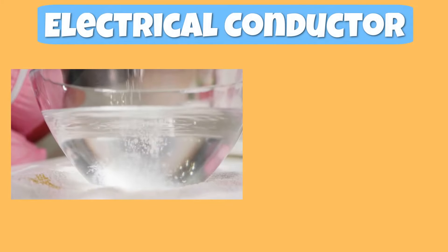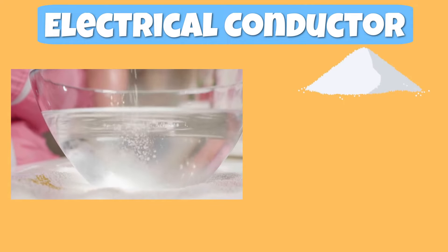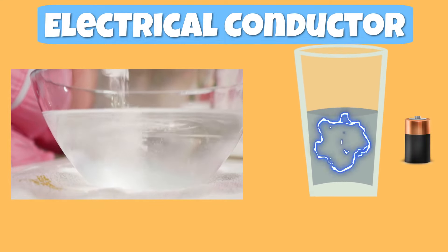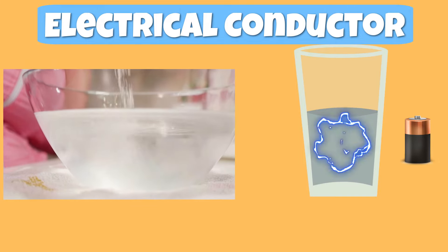An example of an electrical conductor that is not a metal is salt water. Although pure salt and pure water are not good conductors on their own, when they're mixed together into a solution, they allow for electric energy to flow freely.